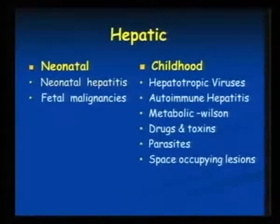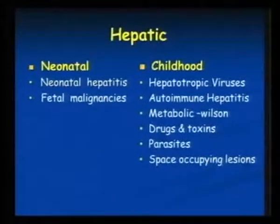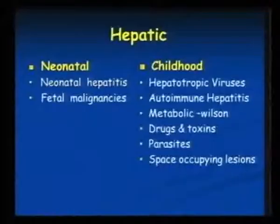Coming to childhood, you have different types of hepatotropic viruses, autoimmune hepatitis, metabolic conditions, drugs and toxins. Drugs like anti-tuberculous drugs and anti-convulsive drugs can cause hepatocyte involvement. Coming to parasites — liver flukes, schistosomiasis — can present with hepatocyte involvement, including even biliary tract involvement.